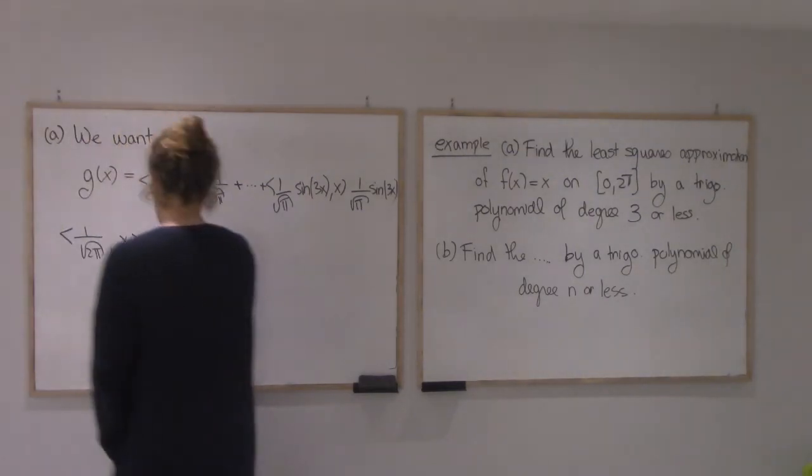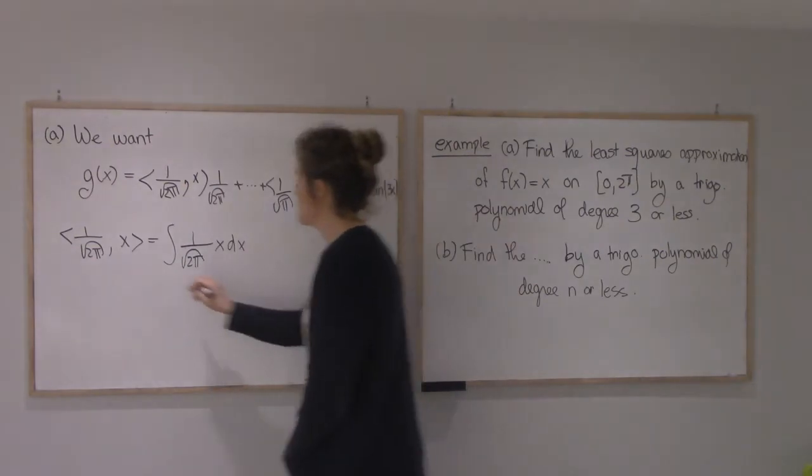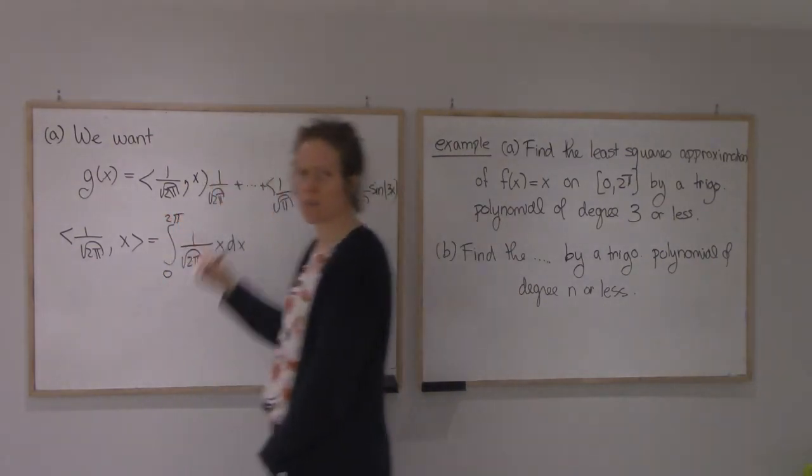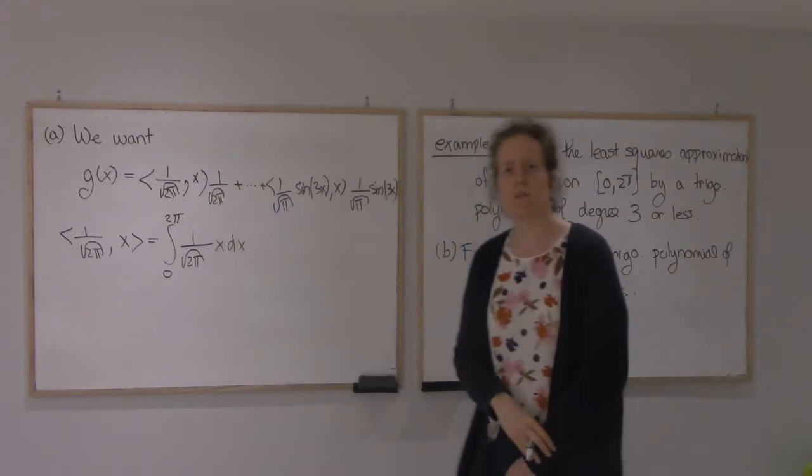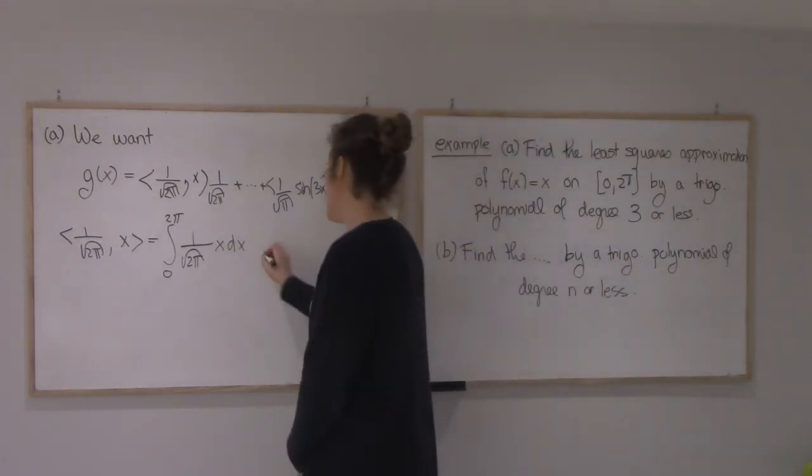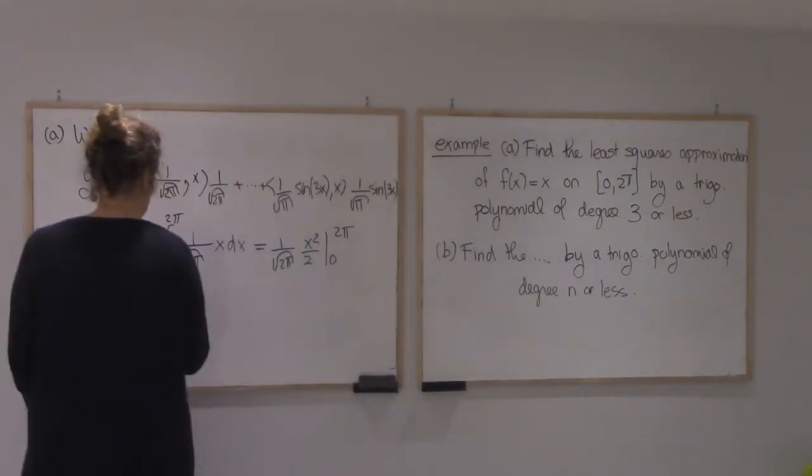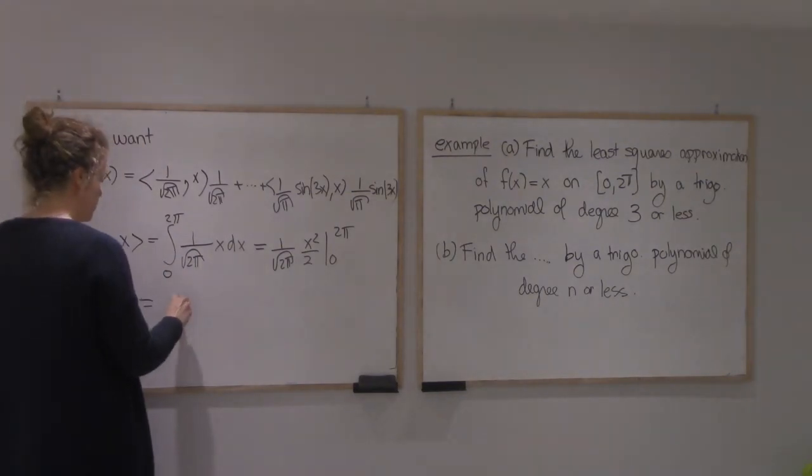This will be the integral of 1 over root 2π times x. My interval is from 0 to 2π, and that's important because if it's something else, this basis is not orthonormal anymore. So this is what I have. I'm going to get 1 over root 2π times x squared over 2 from 0 to 2π. I'm going to get 2π squared, so 4π squared over 2 root of 2π.